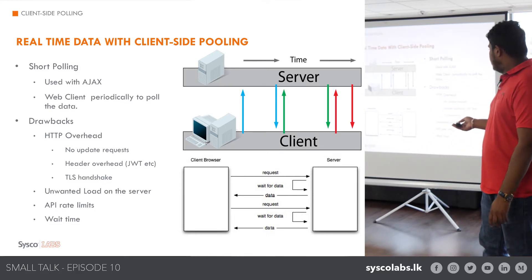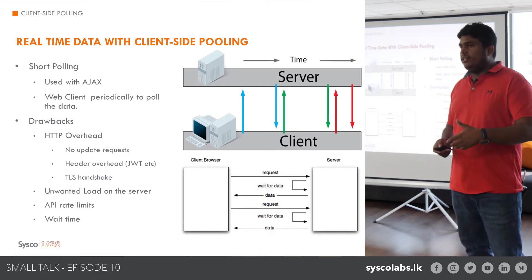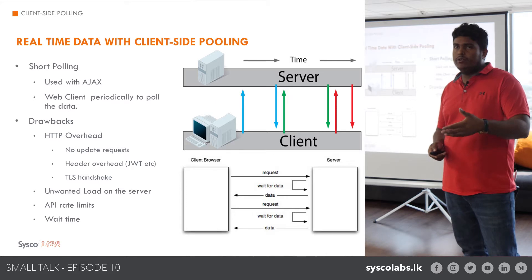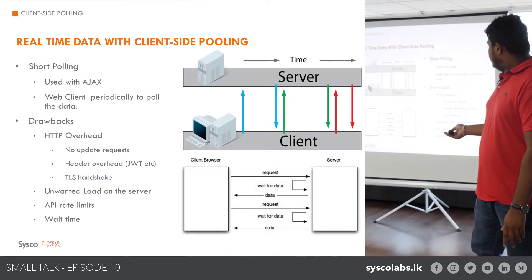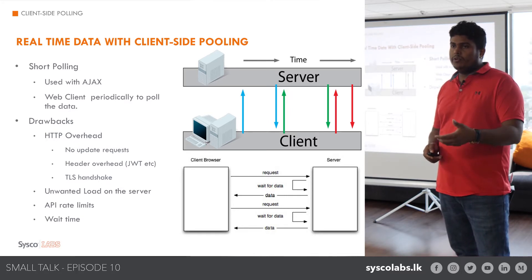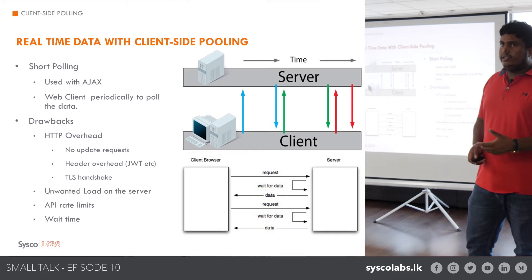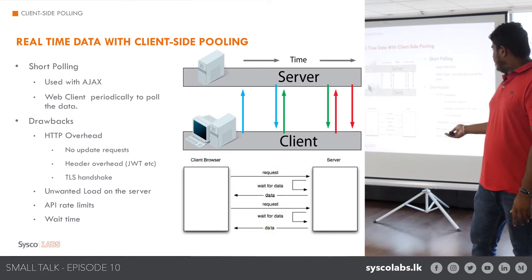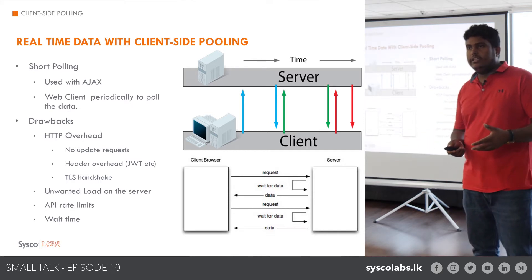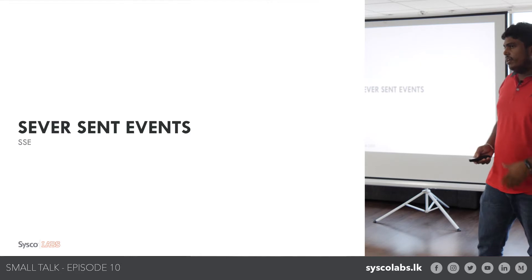Because of polling, there is also unnecessary load on the server. Normally people say 80% of requests in a polling mechanism are useless because you end up with a no-data scenario. Also, if you are dealing with a third party that has a rate limit, that's going to be a problem because you can't serve your clients as expected. And the maximum wait time would be the polling interval, so it's not going to be truly real-time. Because of these drawbacks, people came up with different approaches.